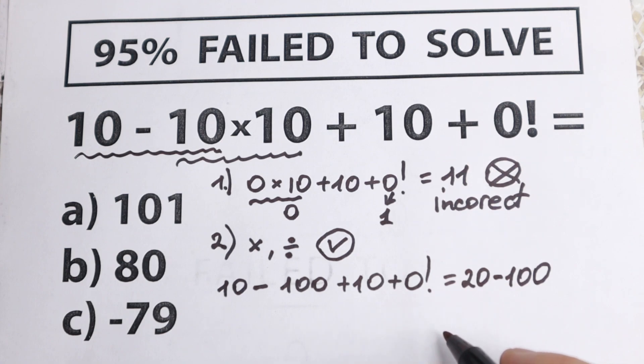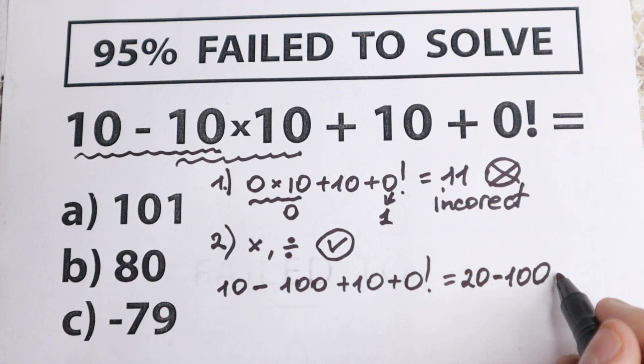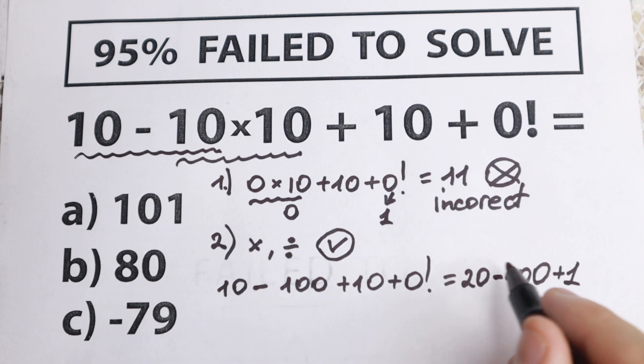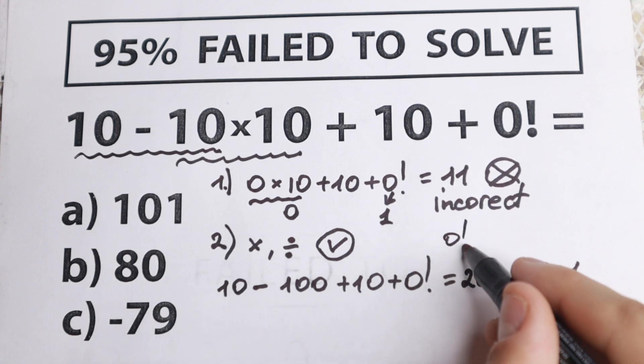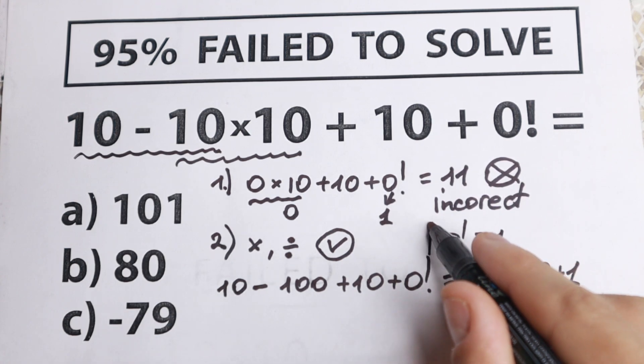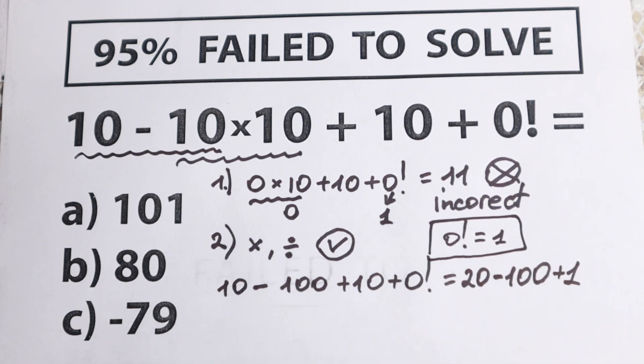And we need to know about 0 factorial. 0 factorial equals 1. So just learn it. Just remember that 0 factorial equals 1. This is the rule that we really need in our case.